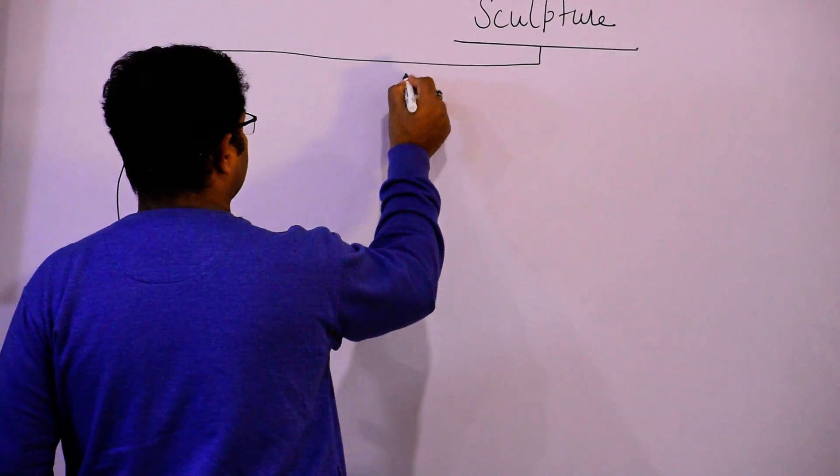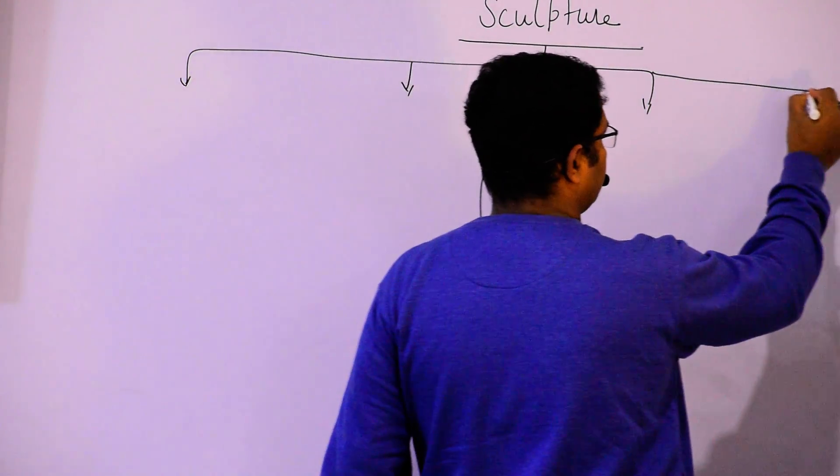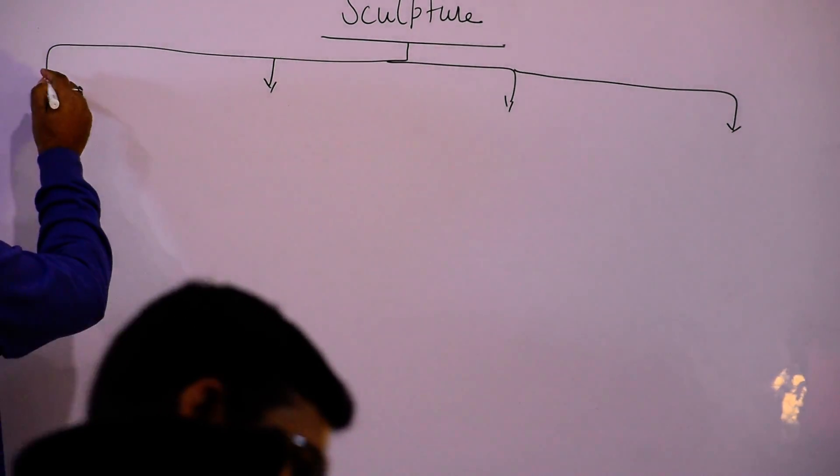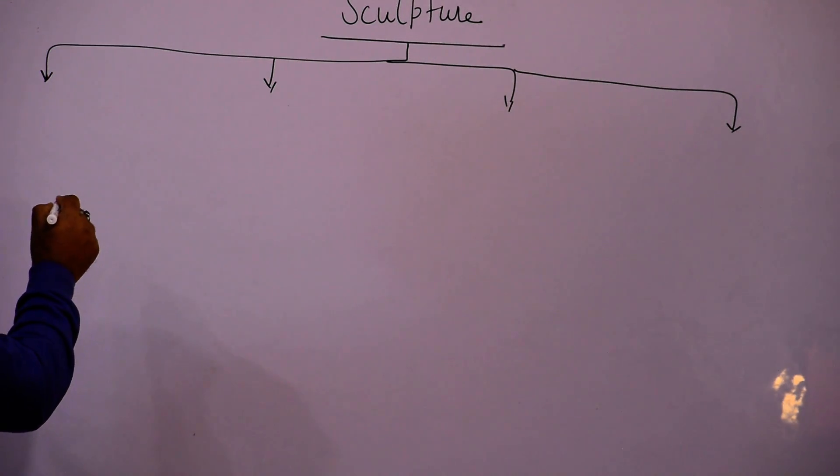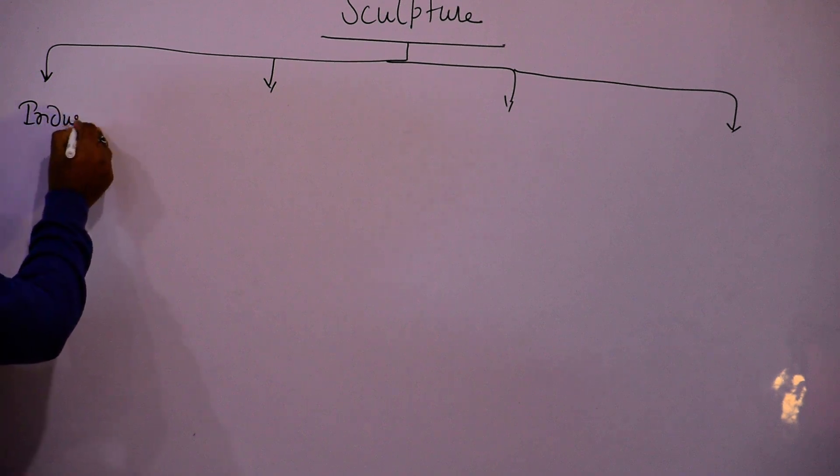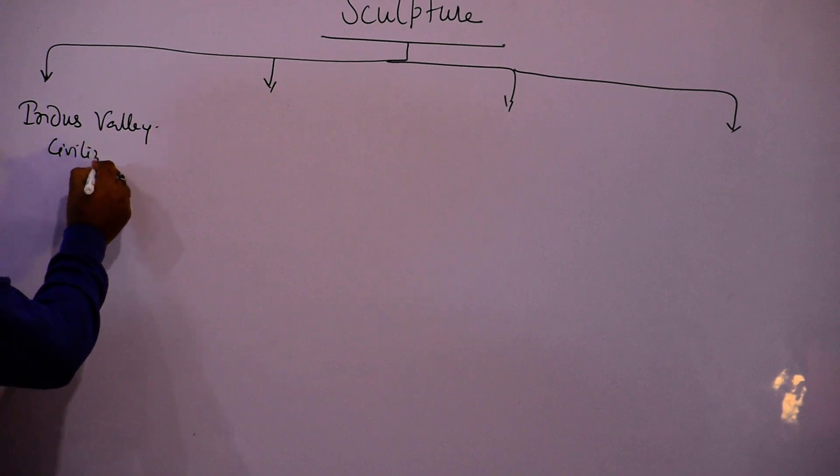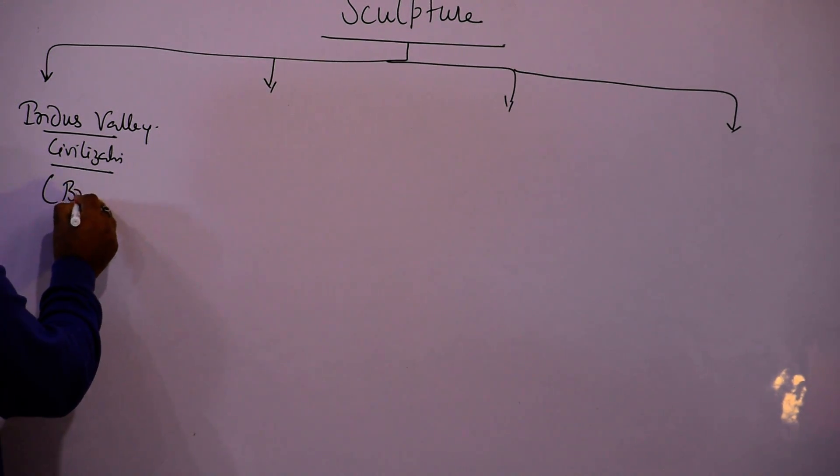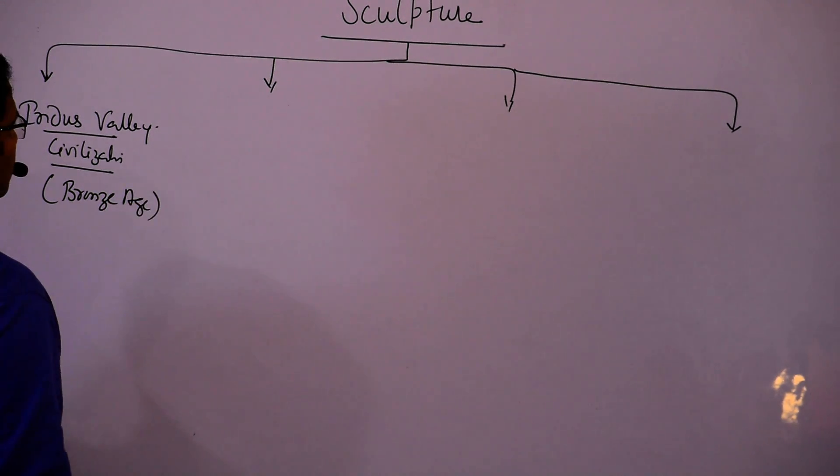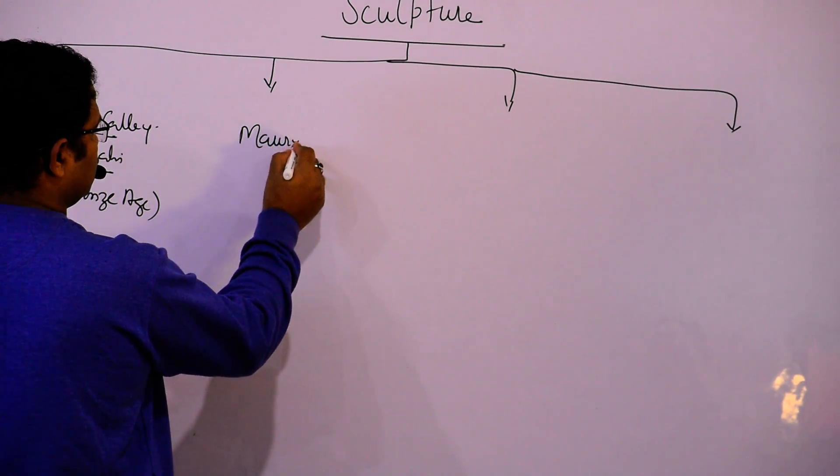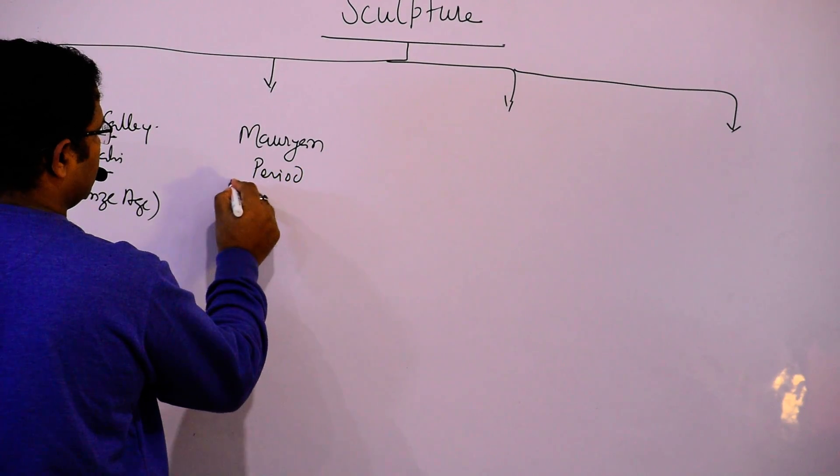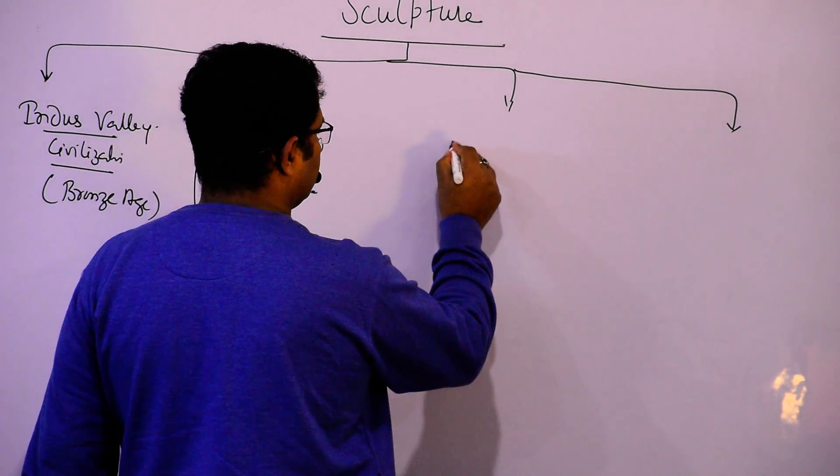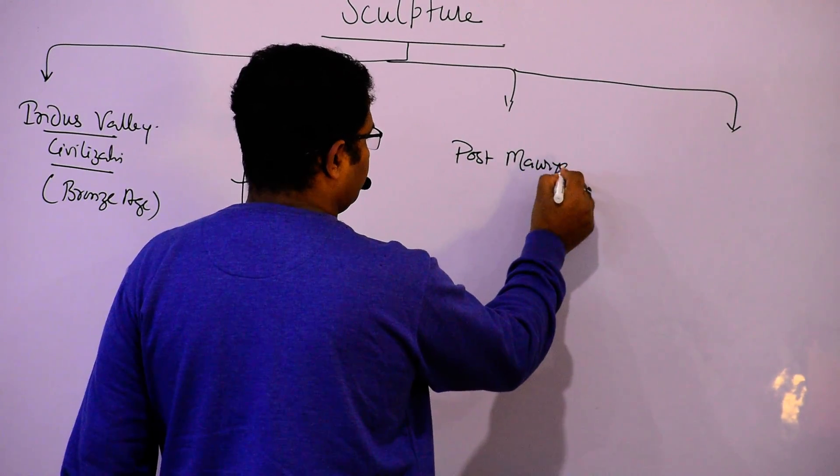And if I say that sculpture, we can be able to see the forms during the Indus Valley civilization. And just nearby that period is also Bronze Age. Thereafter Mauryan period, that is especially Ashoka and all. Thereafter, post Mauryan.